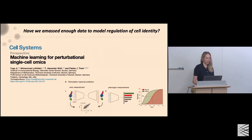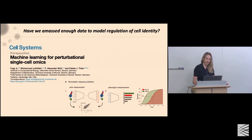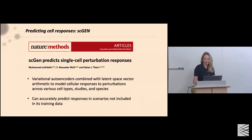Coming to the question of why we created Cell Oracle and the biological questions in mind, we're really taking a step back in the field. We're generating masses of single-cell data, now moving into single-cell multiomics. The question is: have we amassed enough data to model the regulation of cell identity and cell behavior? I point you to this fantastic perspective from Fabian, published in Cell Systems a couple of years ago, addressing this question and some of the emerging approaches back in 2021.